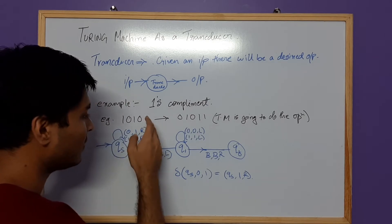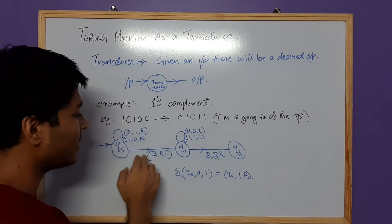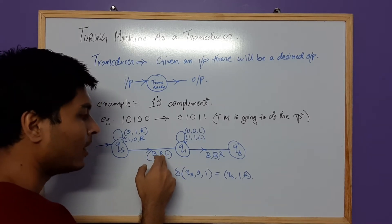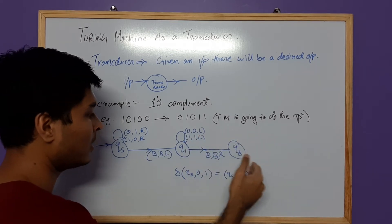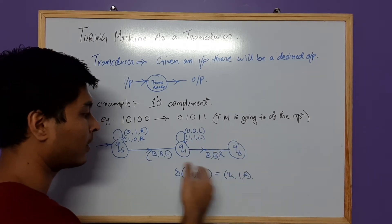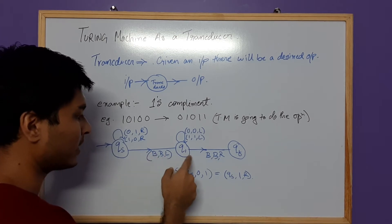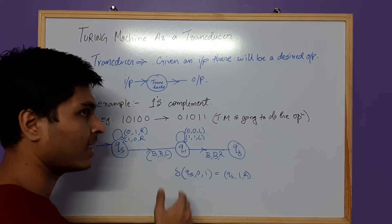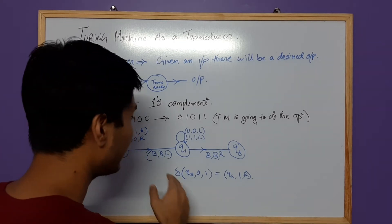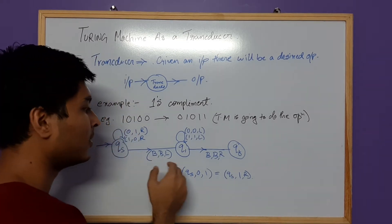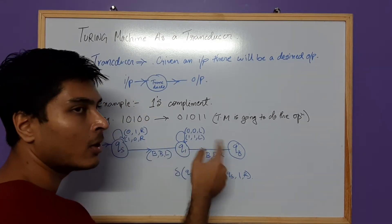After the conversion is done, moving right brings us to the rightmost end of the input. There we encounter a blank. When we encounter that first blank, we keep it as a blank — we don't change anything — and then we start moving left.